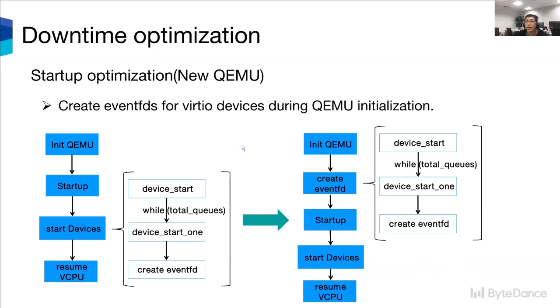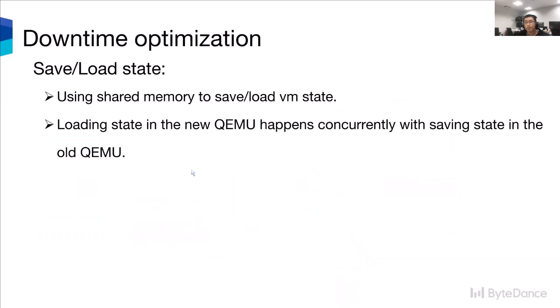Inspired by the optimization of VM suspend, we can pre-create the device EventFD during QEMU initialization. Because the VM downtime doesn't contain the new QEMU initialization, we can decrease the startup time in this way. Finally, we use sealed memory to save the old QEMU state, and loading state in the new QEMU happens concurrently with saving state in the old QEMU.